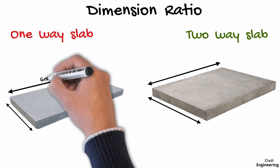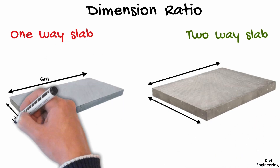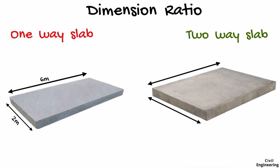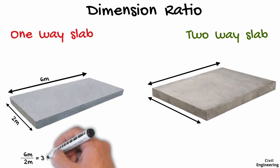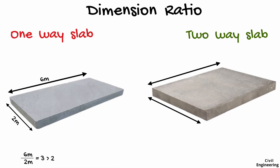Let us take an example of a slab with a length of 6 meters and a width of 2 meters. When we divide 6 meters by 2 meters, we get a ratio of 3, which is greater than 2, so the slab will be a one-way slab.